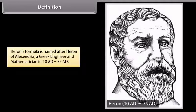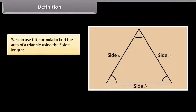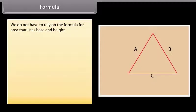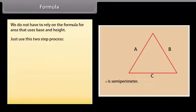Definition. Heron's formula is named after Heron of Alexandria, a Greek engineer and mathematician. We can use this formula to find the area of a triangle using the three side lengths. The formula given by Heron about the area of a triangle is also known as Heron's formula. We do not have to rely on the formula for area that uses base and height. The figure illustrates the general formula where S represents the semi-perimeter of the triangle. We just have to use a two-step process.